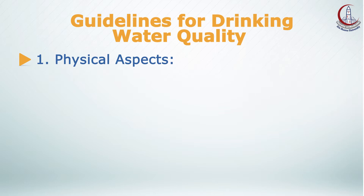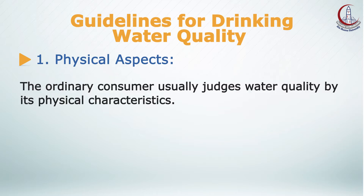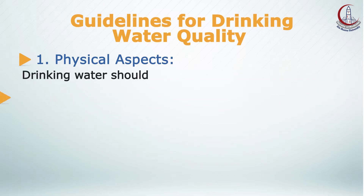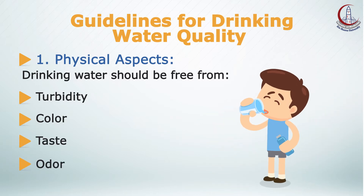Regarding physical aspects, the ordinary customer usually judges water quality by its physical characteristics. Drinking water should be free from turbidity and color that may be present as a consequence of inadequate treatment or from sediments in the distribution system. It should also have acceptable taste and odor, which could be disturbed by contamination of chemicals or as a by-product of water treatment such as chlorination.